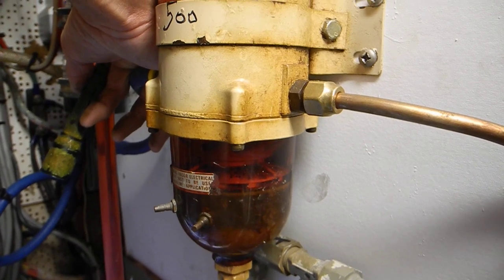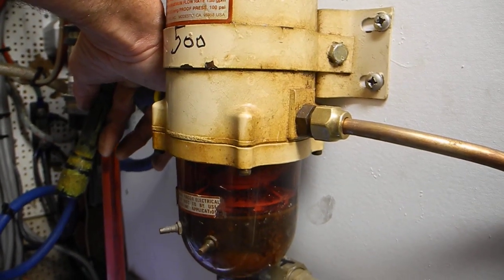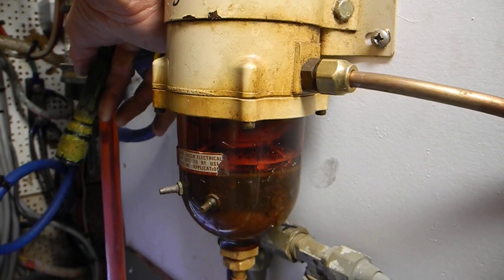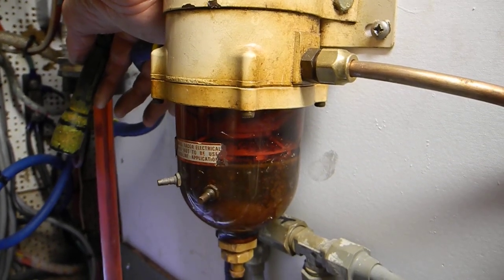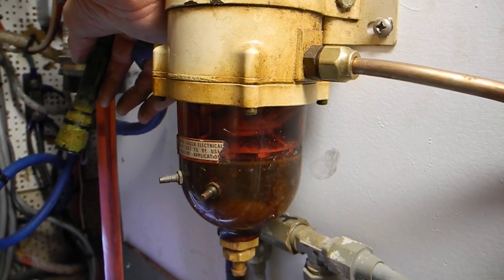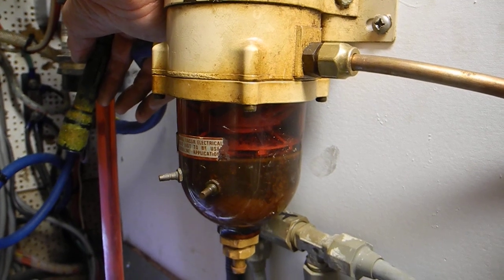We're looking at a fuel filter, our Acor Model 500. You can see somebody wrote on their 500. And we're looking in the bowl. It should be cherry red or cranberry red diesel fuel. No highway tax paid.